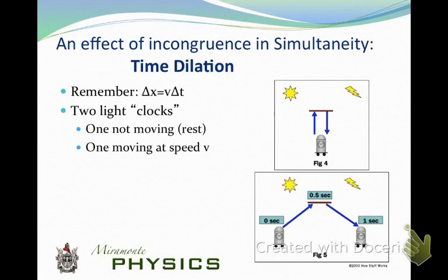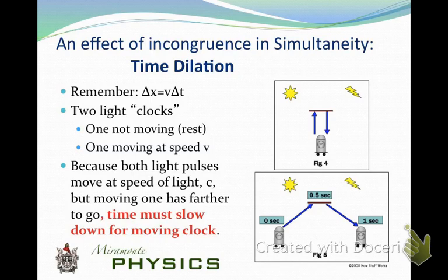We're going to look at the math of what happens with two light clocks — one moving at speed V and the other at rest. Because both light pulses move at the speed of light, but the moving one has further to go, the time must slow down for the moving clock. That's the whole premise: time is going to slow down for the moving clock because the light pulses go at the same speed, but one has farther to go.